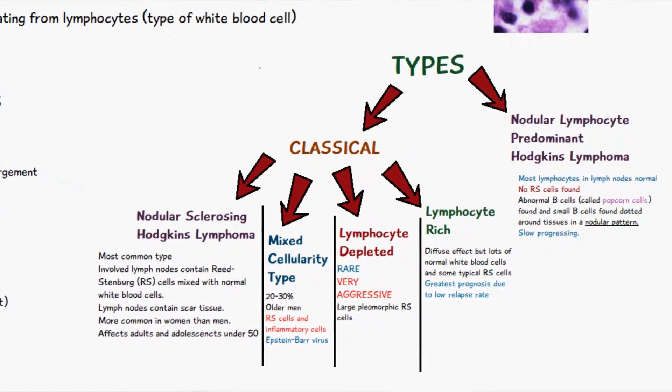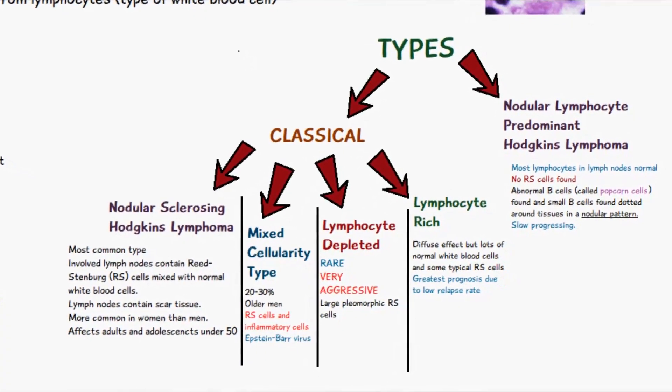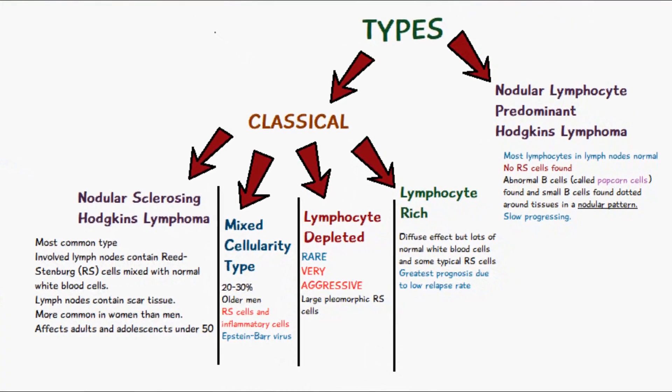Within the classical group of Hodgkin's lymphoma there are four types: nodular sclerosing Hodgkin's lymphoma, mixed cellularity type, lymphocyte depleted, and lymphocyte rich.